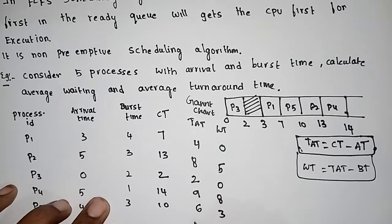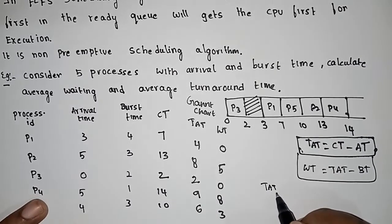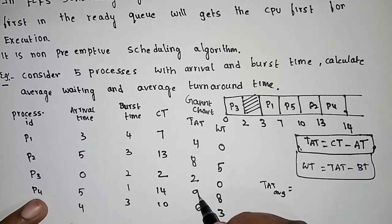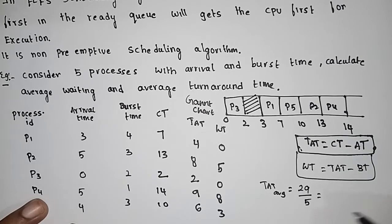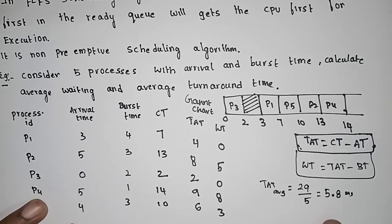Average turnaround time equals sum divided by number of processes. So 4 plus 8 plus 2 plus 9 plus 6 equals 29. 29 divided by 5 equals 5.8 milliseconds per unit.